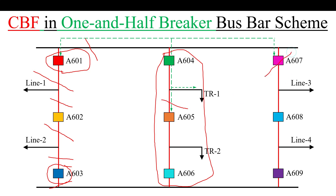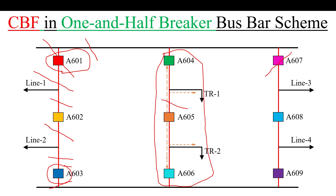Once these associated breakers operate, the transformer section becomes isolated and no supply remains. For A605 failure specifically, tripping from its CBF relay is extended to A604 and A606. There is no need to trip TR1 or TR2, but if it were a transmission line, tripping would be extended to it — that is why the arrows are shown.